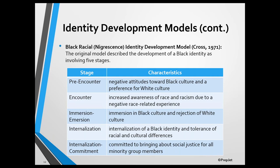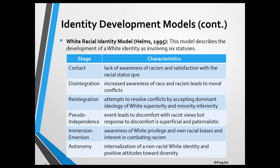Our last model is Helms' White Racial Identity Development Model. It consists of two phases — abandonment of racism and defining a non-racist white identity — and each phase includes three statuses. The contact status is characterized by a lack of awareness of racism and satisfaction with the racial status quo. People in this status usually have had limited contact with people from racial and cultural minority groups, and they may describe themselves as being colorblind.